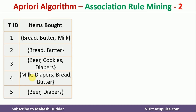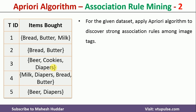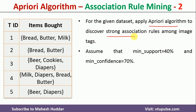This is the dataset given to us, consisting of 5 transaction IDs. In each and every transaction, the customer buys a few products like bread, butter, milk, beer, cookies, diapers, and so on. What we need to do is apply the Apriori algorithm to generate strong association rules, given a minimum support of 40% and a minimum confidence of 70%.